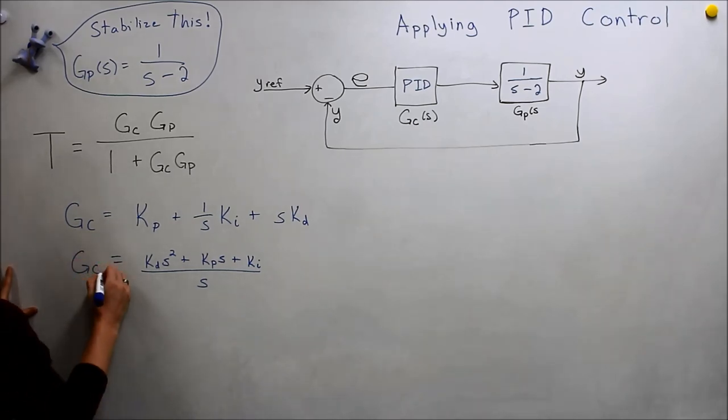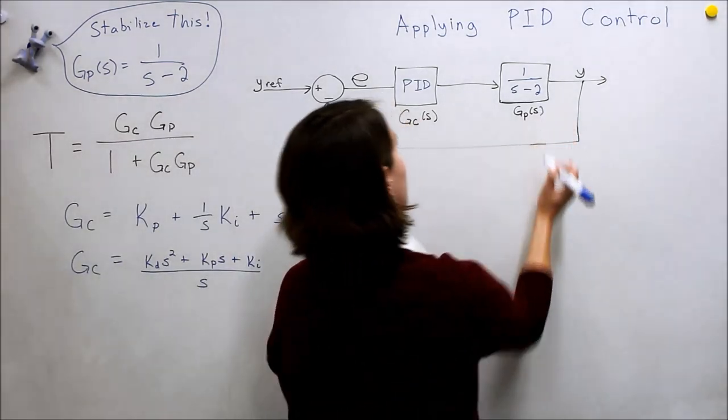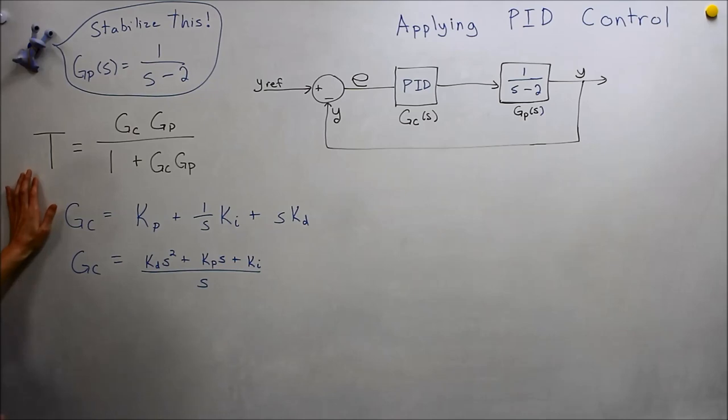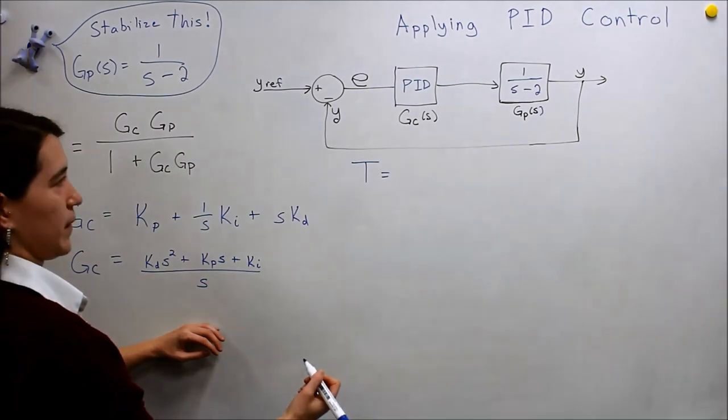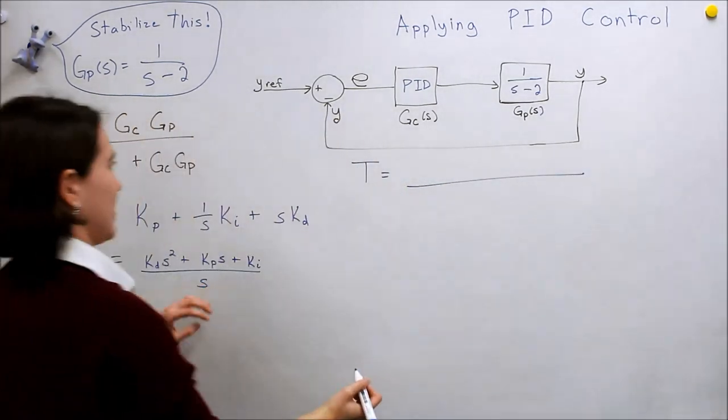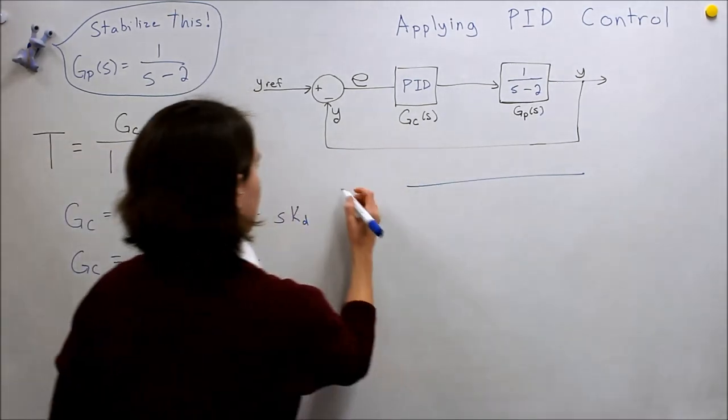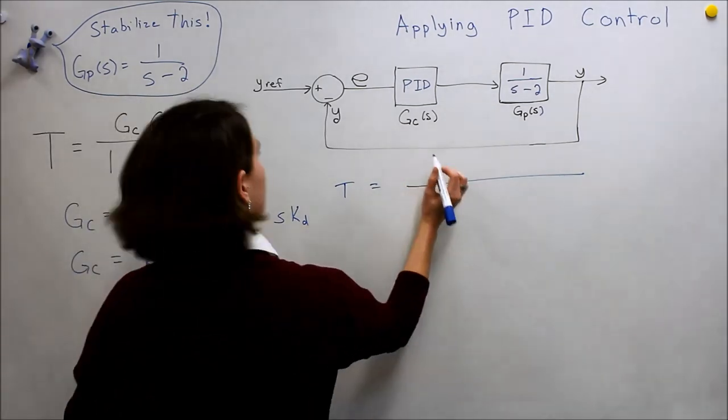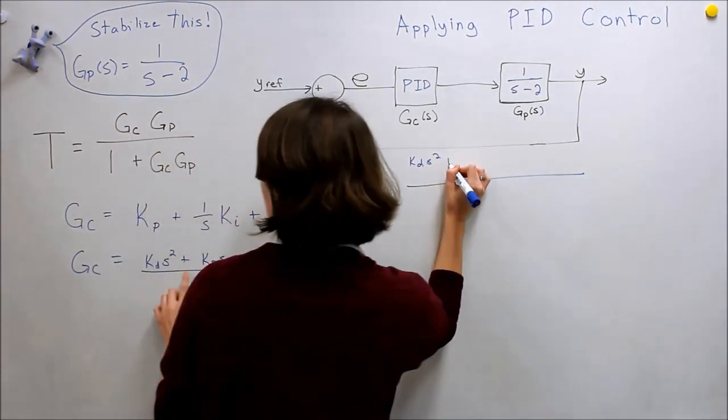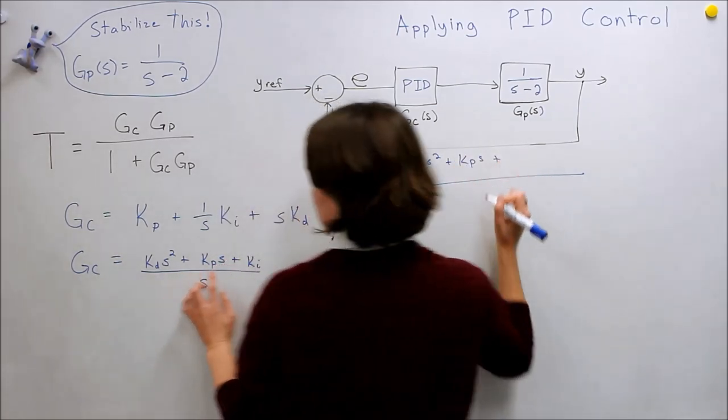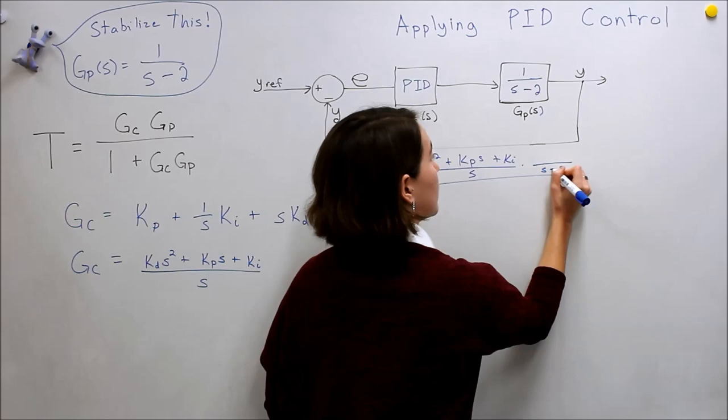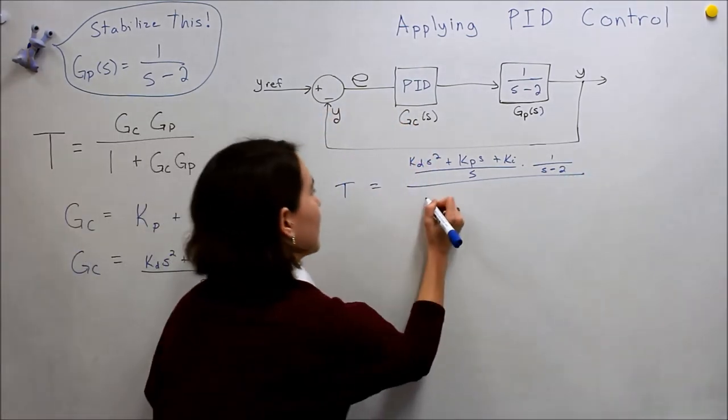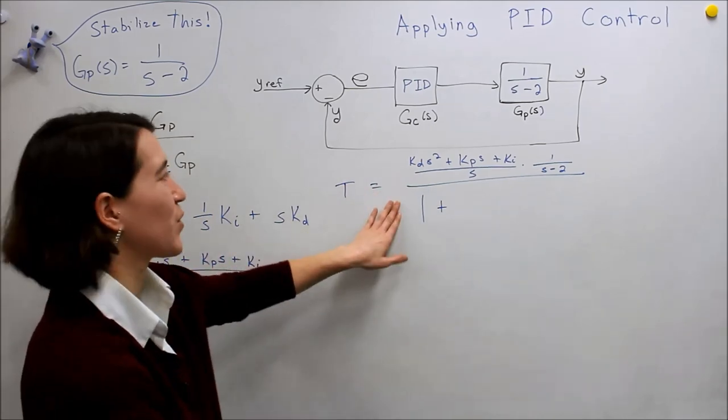So we have our two expressions here. We know GC, we already know GP. And so we're going to put it into our closed loop function and see what our output, our total closed loop transfer function, will look like. So we'll do that over here. So T equals, this is going to get a little bit exciting here. So we're going to have T equals, we have this whole expression, right? So we have KD s squared, plus KP s, plus KI. This is all over s. And then we have this function, so we have multiplied by s minus 2 over 1. And then we have that same exact thing, the numerator, denominator is 1 plus that whole thing. So we'll just write it here. We have s, s minus 2, this guy on the top, KD s squared, KP s, plus KI.